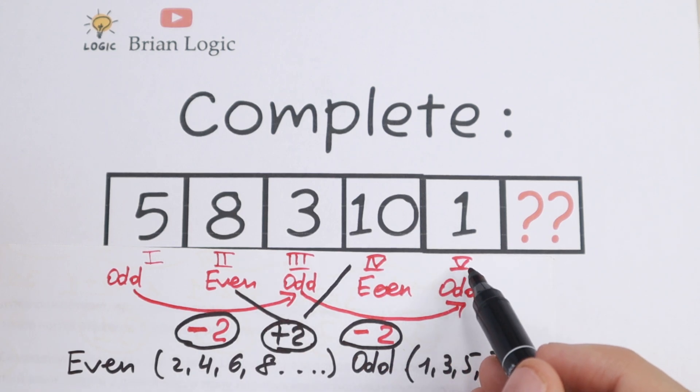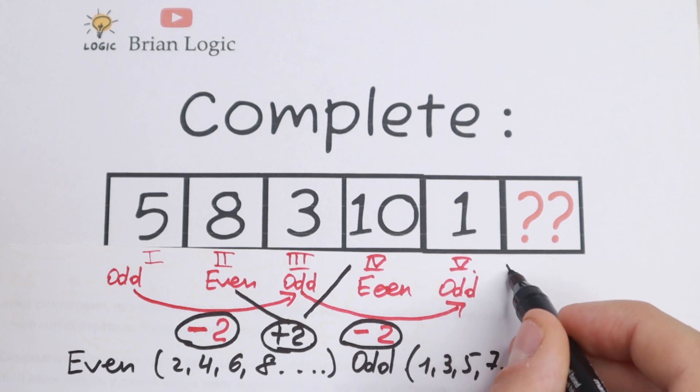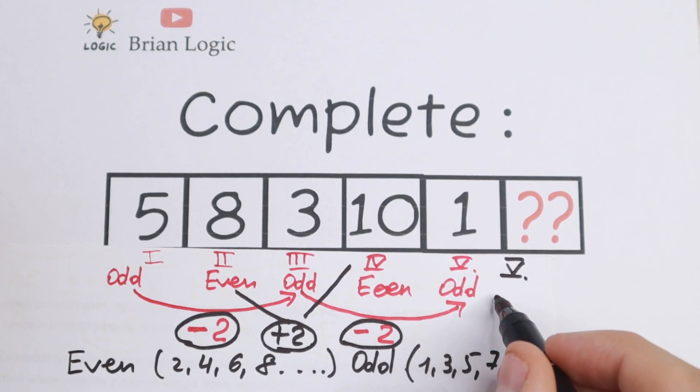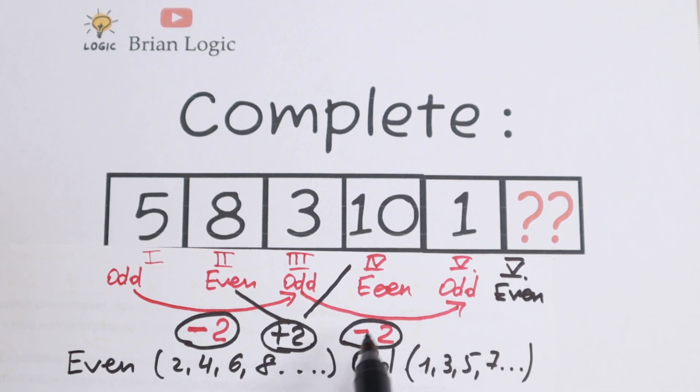So the last number is odd number. So the sixth number, it's not hard to see, will be even number. Even. And we need to add 2. This is our pattern.